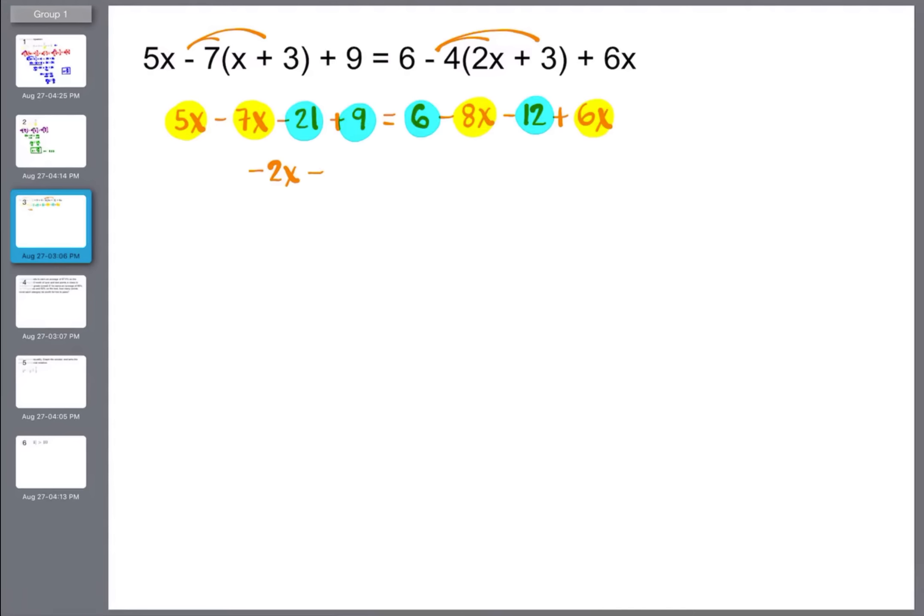So five x minus seven x will give me negative two x. Negative 21 plus nine should give me negative 12. And if we move to the right hand side, I have a negative eight x and a six x, which would be negative two x. And then a six minus 12 should give me a negative six. From here, I'm going to move the variable first. So if I add two x to both sides, you notice that the variable completely cancels here, leaving us with negative 12 on the left. And it completely cancels on the right, leaving us with negative six. And that looks weird because it's missing a variable. And negative 12 definitely does not equal negative six. Therefore, there is no solution that will make that equation true.